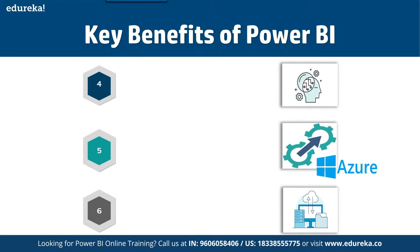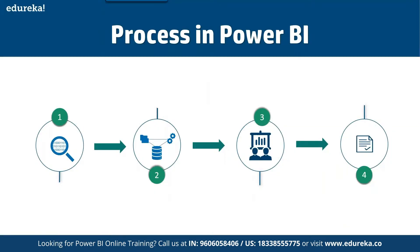Now let's talk about the process in Power BI. As you can see in the diagram, in the first phase Power BI searches and finds the data. Once it finds the data, it performs ETL operations — Extract, Transform, and Load — filtering and relating the data. In the third phase it analyzes, predicts, and performs research on the data. In the last phase it shows you the entire research summary and output of your data. That is basically the process of Power BI.